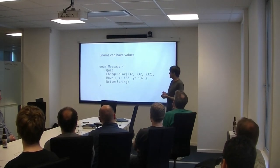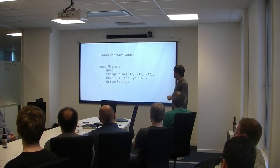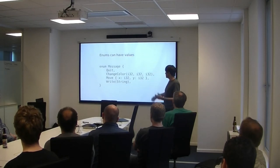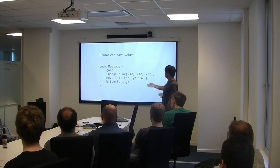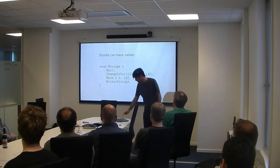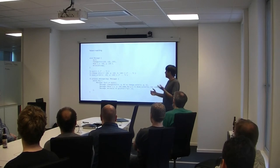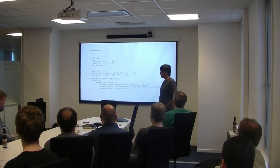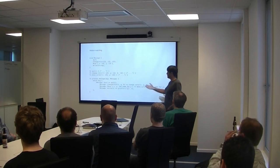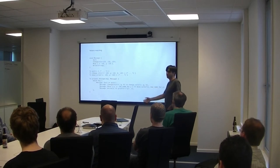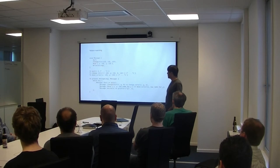Enums can have values in Rust, so they're a lot more powerful than C enums. You can declare a value and provide data to it. You can even name the different pieces — a bit like a struct inside an enum. Rust also has pattern matching, which combined with enums is very powerful. You use the keyword 'match', give it something, and it matches against different cases. It doesn't have to be an enum — you can match integers, strings, and other things.